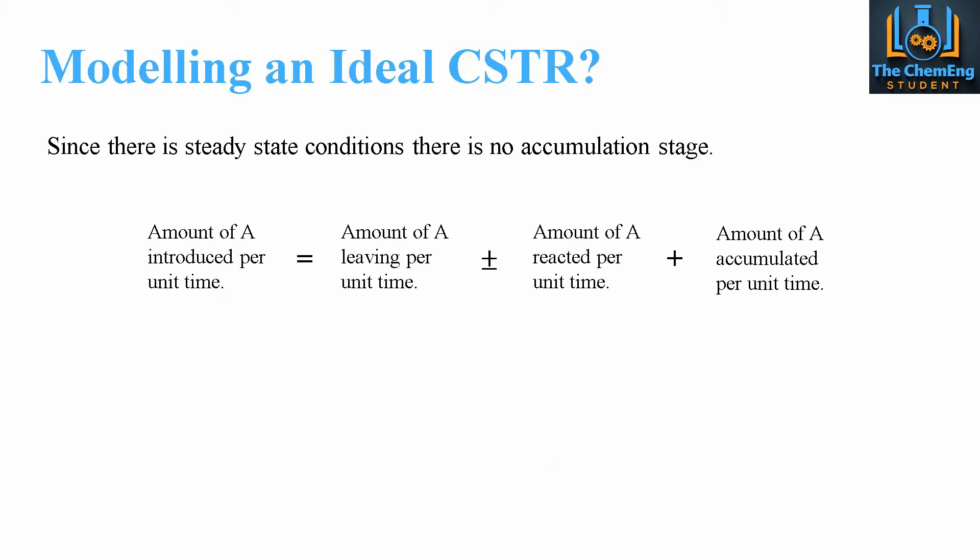Now since we have steady state conditions, we can neglect the accumulation term, which means our equation would rewrite as the following, whereby we can cancel out this term here. So what we are left with is F₀CA₀ equals FCA plus or minus, minus rₐ multiplied by the volume.